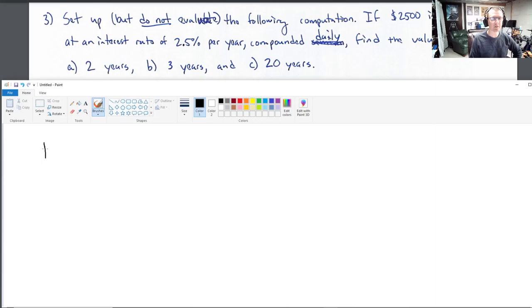So, 2,500. That's our initial principal amount. Okay. Interest rate, R. We need to write as a decimal. So, 2.5% is 0.025. Okay. This is 2.5 hundredths. That's what 2.5% means.